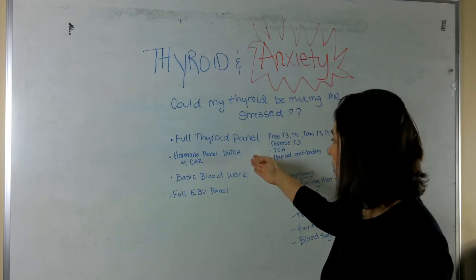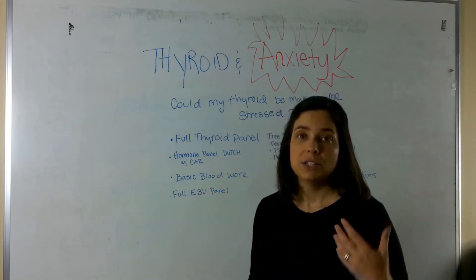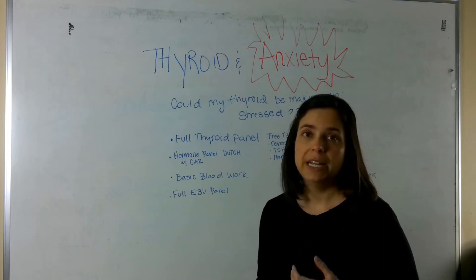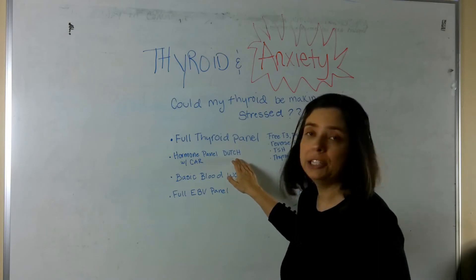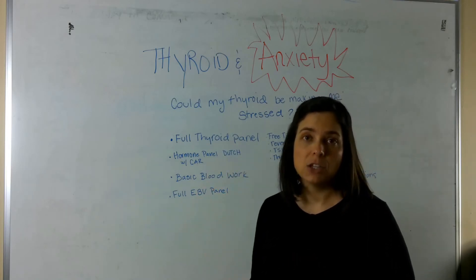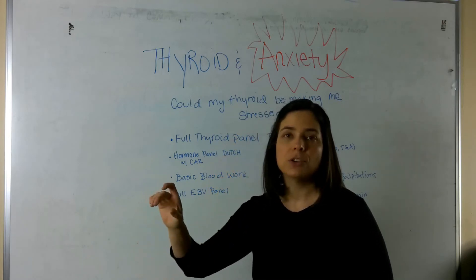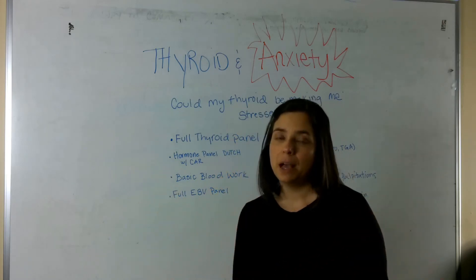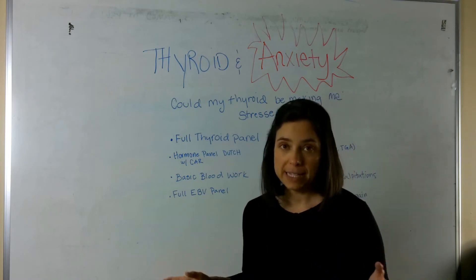What's something else we might run? We might run a hormone panel. So, actually checking testosterone, progesterone, estrogen. And we love a company called Dutch. It's a dried urine test. So, it actually will tell you where in that cycle things are going on, if it's something coming from your liver, if you're missing B vitamins. It's a fantastic panel.